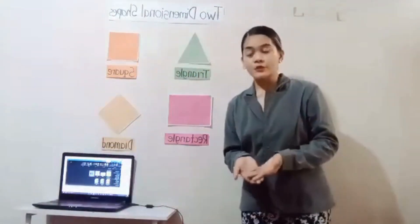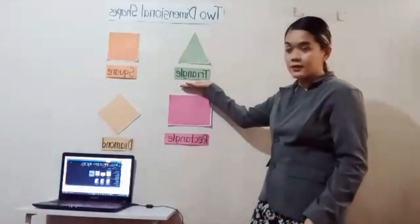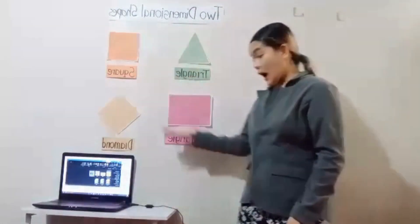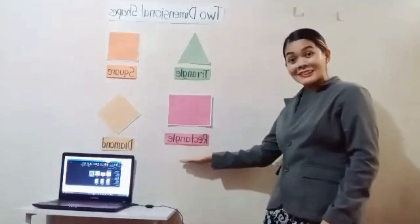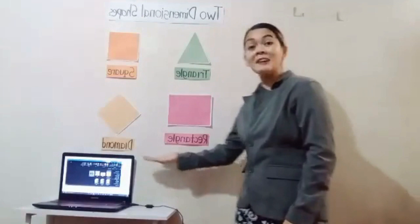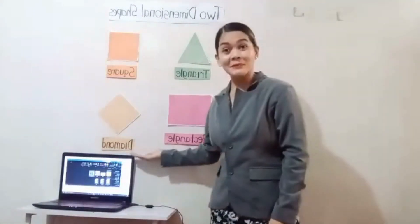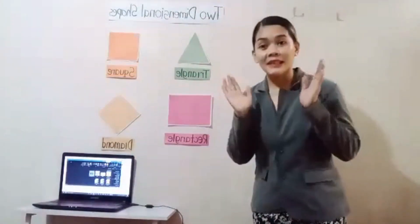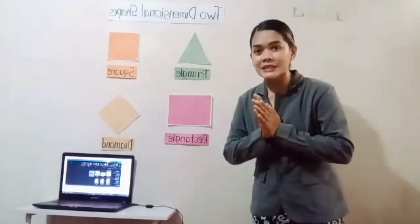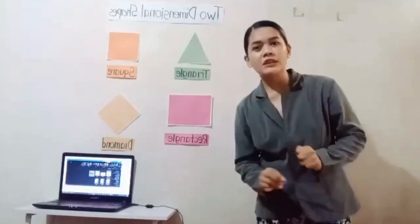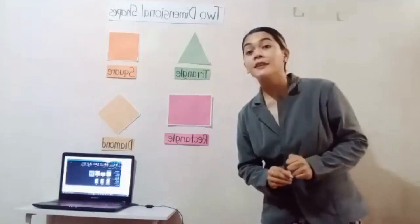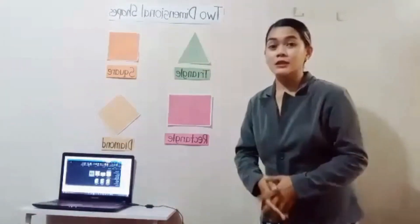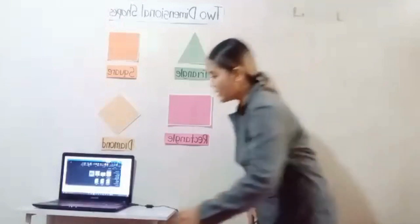Now let us see one more time the shapes that we have for today. This is a triangle, square, rectangle, and a diamond. Very good! They are all doing very well.